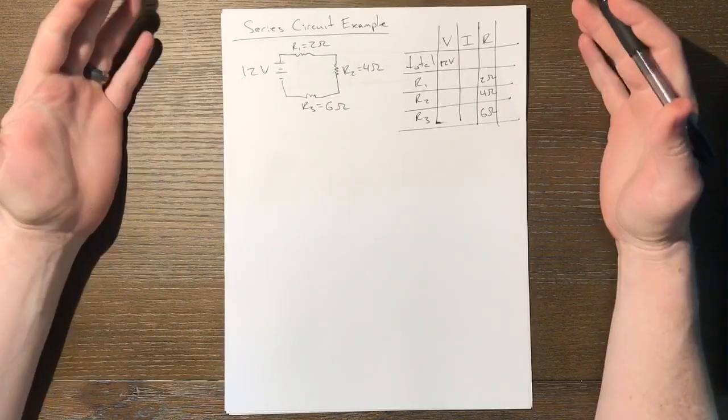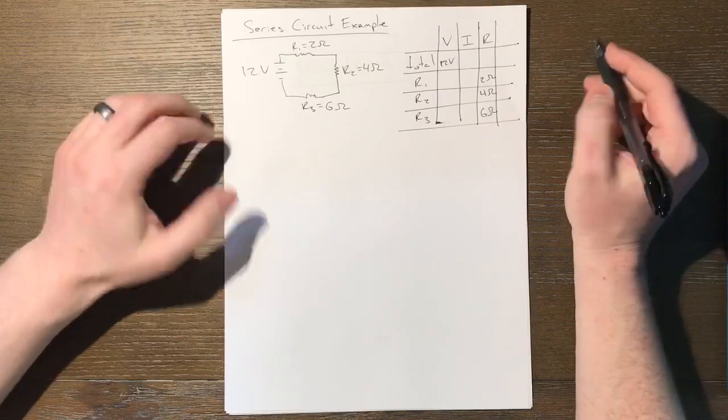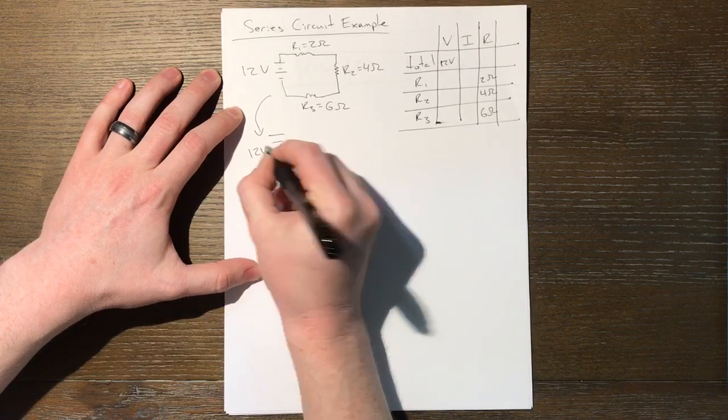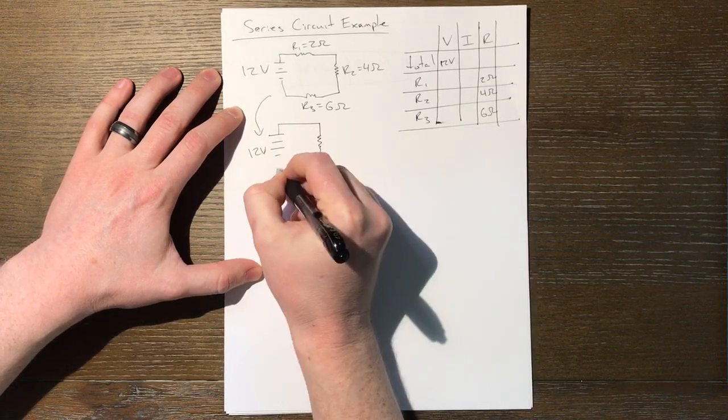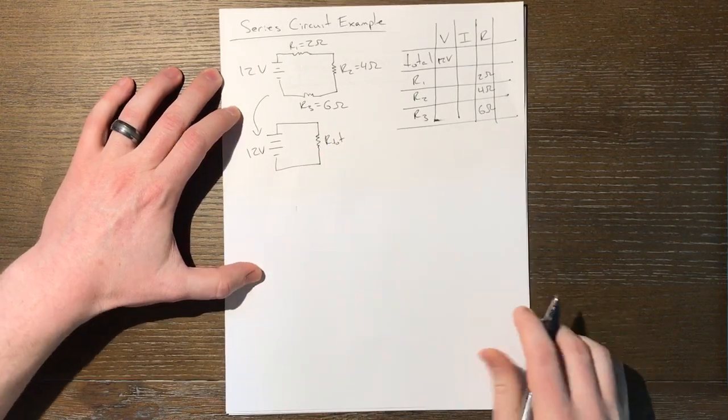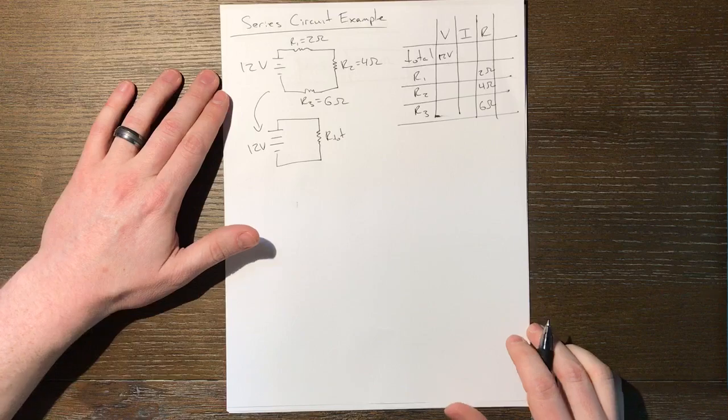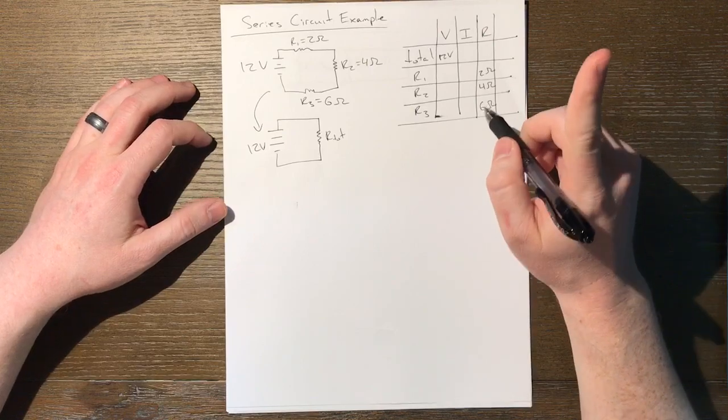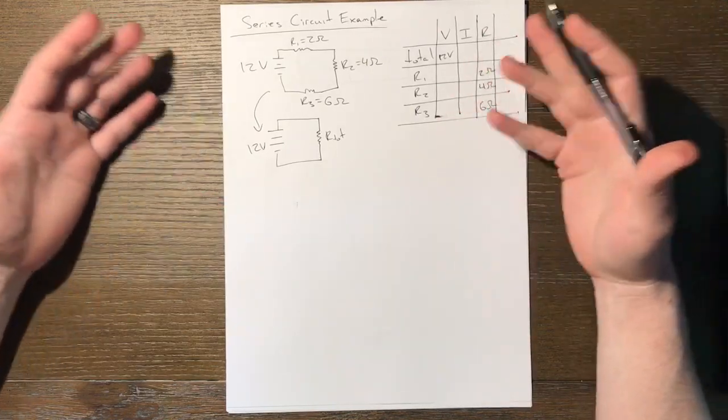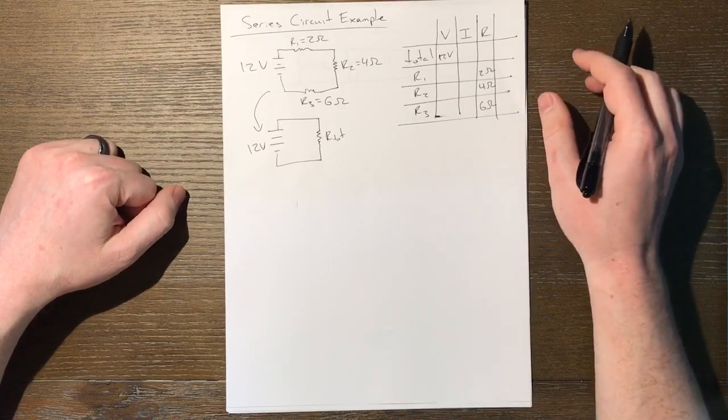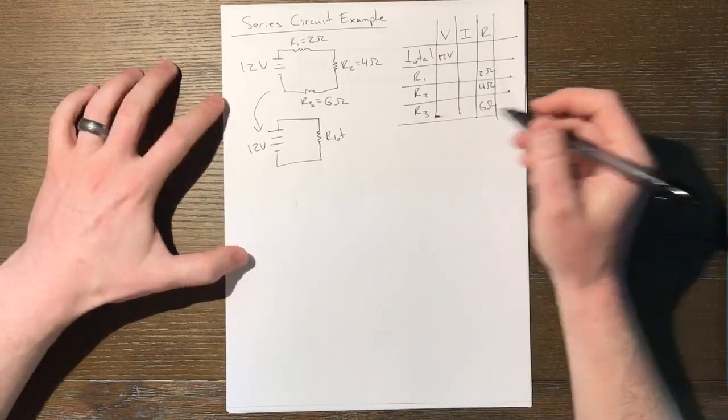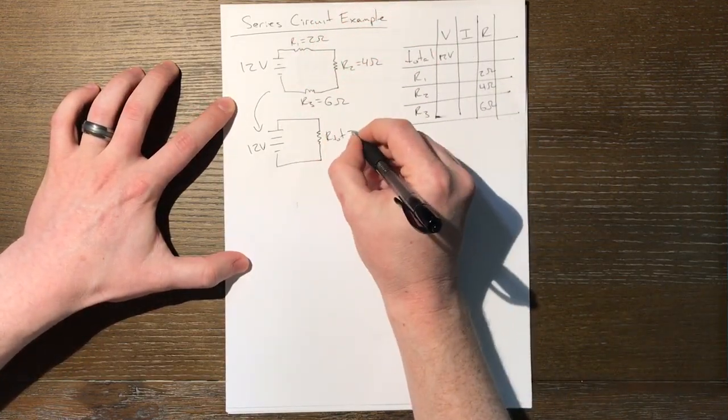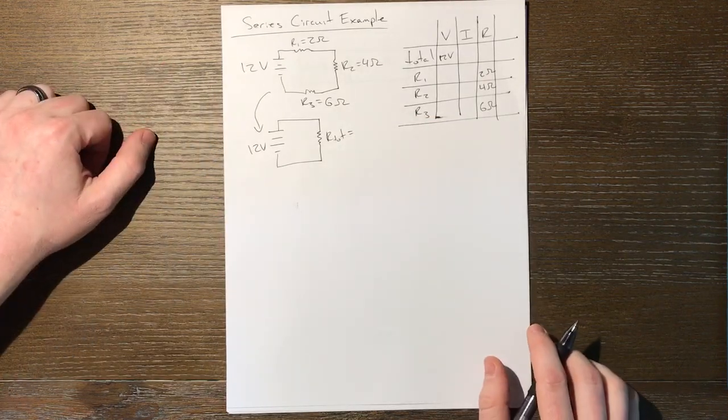All right. Well, where do we start with the circuit problem? Well, the best place to always start is simplifying your circuit. So let's redraw this circuit. It still has a 12 volt battery. But we want to redraw it in such a way that it has one total resistance. Now when it's purely series or purely parallel, we can do that in one step. But these are all in series together. We can come up with their resistance in one step.